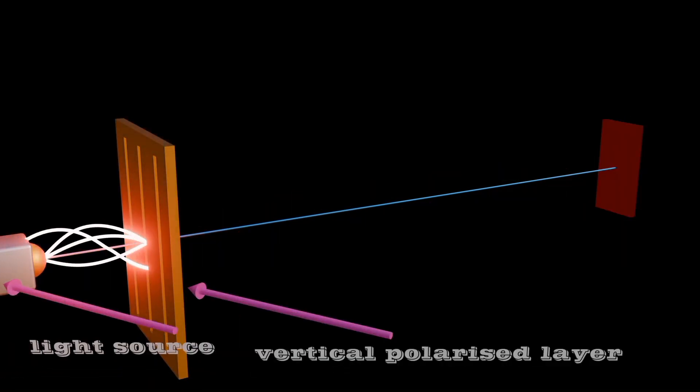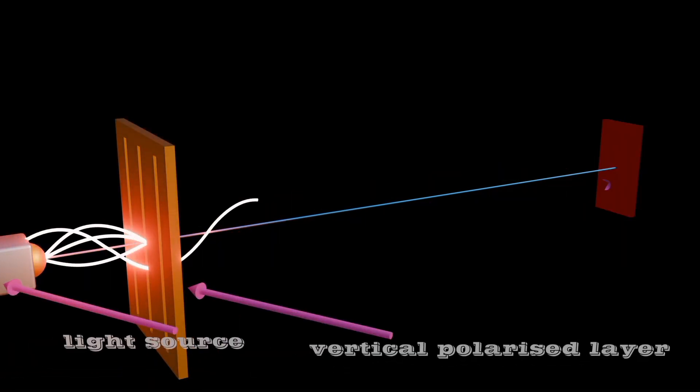So we use the vertical polarizer, the light spectrums will be blocked, allowing light only in the vertical direction.